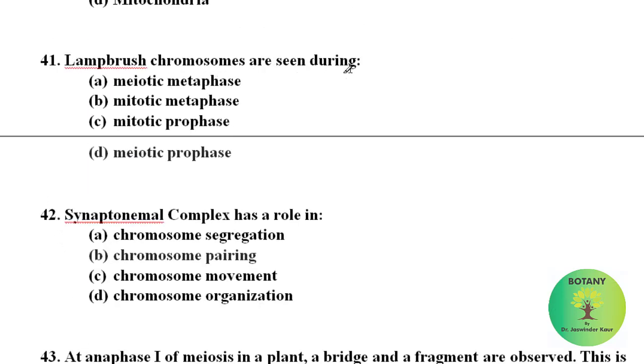Lampbrush chromosomes are seen during meiotic prophase and these are first described by W. Flemming in 1882. Synaptonemal complex has a role in chromosome pairing. Synaptonemal complex is a protein structure that forms between the homologous chromosomes during the meiosis first in eukaryotes.